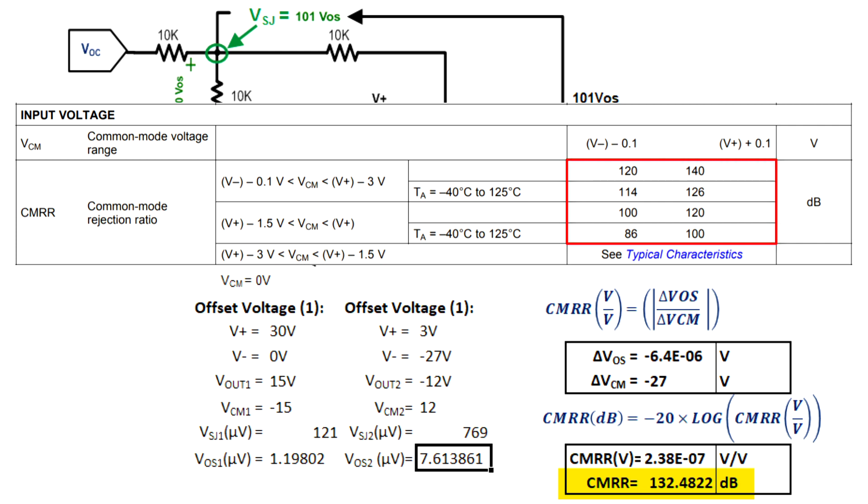132 dB is within the specification outlined by the TI datasheet. I've shown you how to measure common mode rejection ratio for a linear amplifier. It's important to utilize the TI datasheet when analyzing electrical parameters, as the TI datasheet provides the test conditions for each specification. For TI datasheets, please refer to TI.com. Thank you for watching this troubleshooting video.